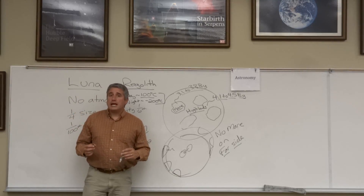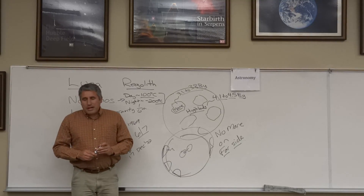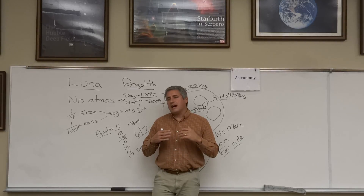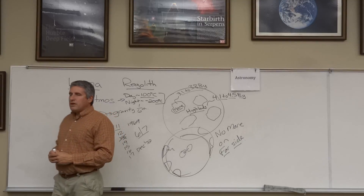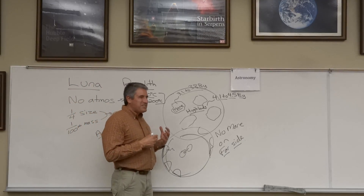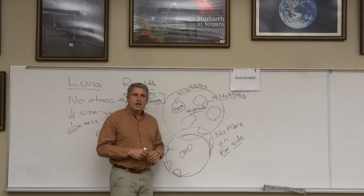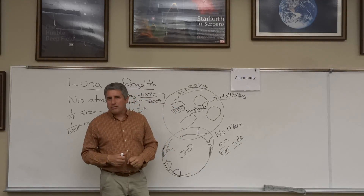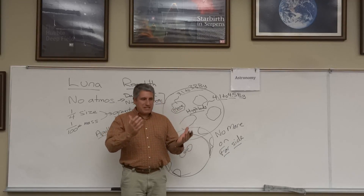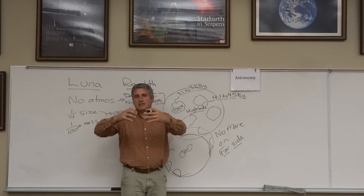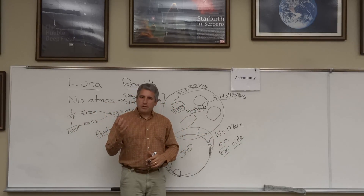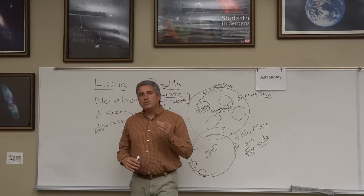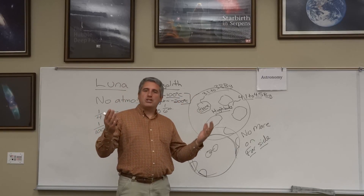That brings us to the moon's formation. The moon's average density is 3,300 kg/m³, implying a quite small core — the moon is iron deficient. Interestingly, the moon also has very similar rock composition to the Earth. The prevailing wisdom is that early in Earth's history, after iron had already sunk to the center, the Earth was struck by a large impactor. That impactor blasted iron-poor material off the early Earth, which later coalesced to form the moon, which then became geologically and tidally bound to the Earth.